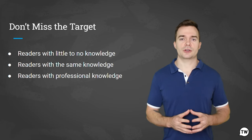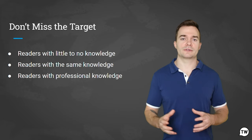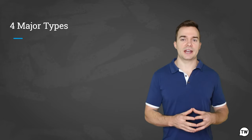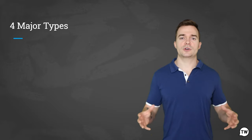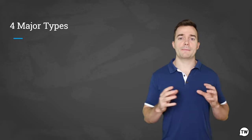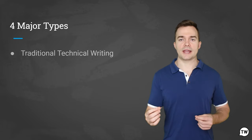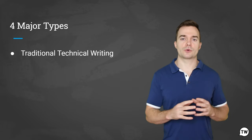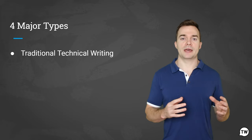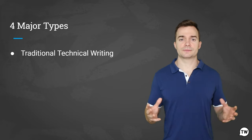Technical writing is a broad concept that refers to a number of writings used in research, engineering, and skilled trades. The major types of documents can be divided into four major types. First, traditional technical writing, mainly used for education and teaching — it includes scientific and medical papers, theses, and books.